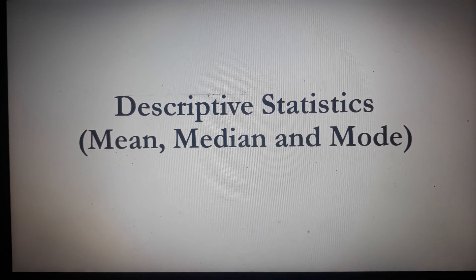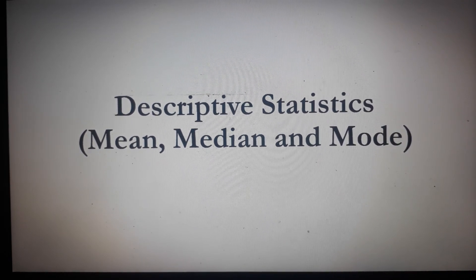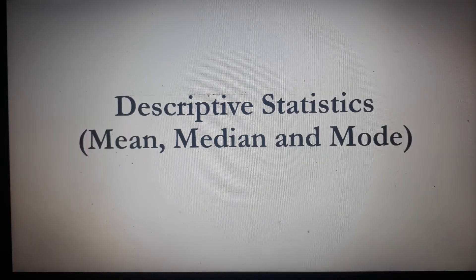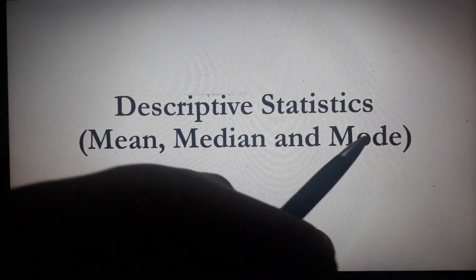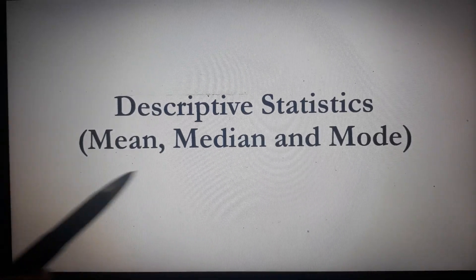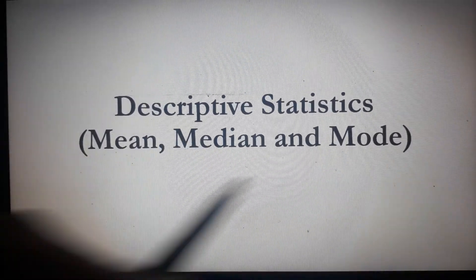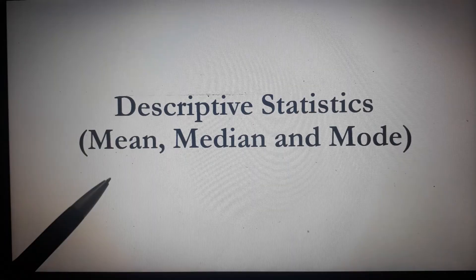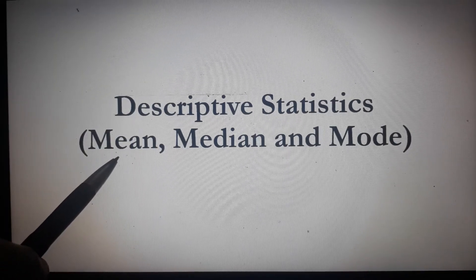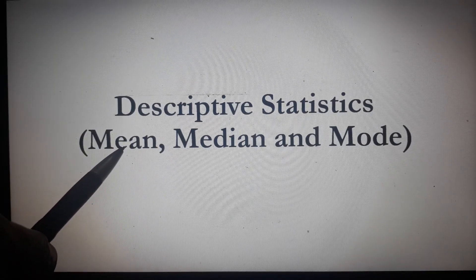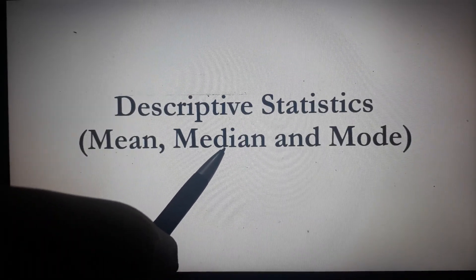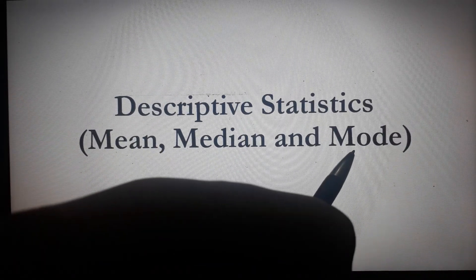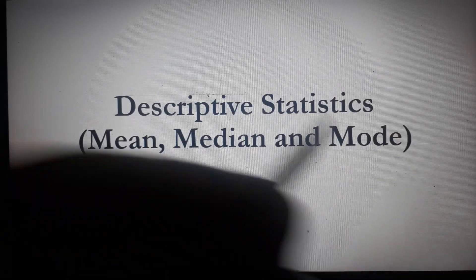Let's start our review. We will be starting off with descriptive statistics, in particular the mean, median, and mode. These are the measures of central tendency. Mean is simply the average—we will just consider the arithmetic mean. Median is the middle value, and mode is the value that occurs most in the data.